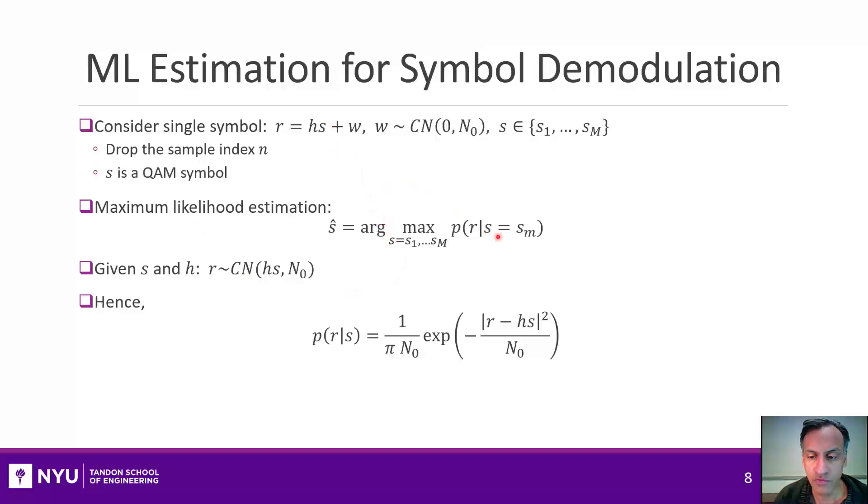If you had to work it out for this simple Gaussian channel, if you knew the S, and remember that we're playing in the universe where you know H, so this is all known. So it's a known quantity plus a Gaussian, but that's just another Gaussian with a mean shifted by H times S and the same variance as W. So that means that if you know S and H, R is also Gaussian with this mean HS. So that likelihood is given by the complex Gaussian expression, which is this standard exponential.